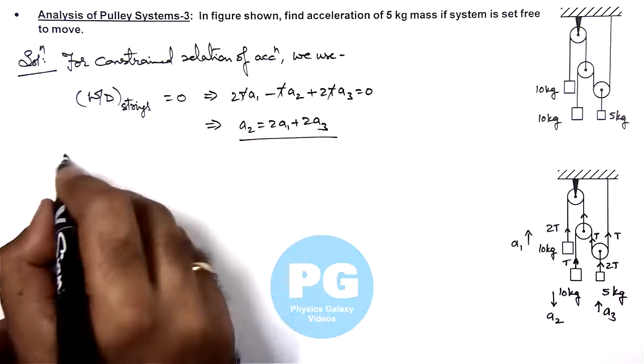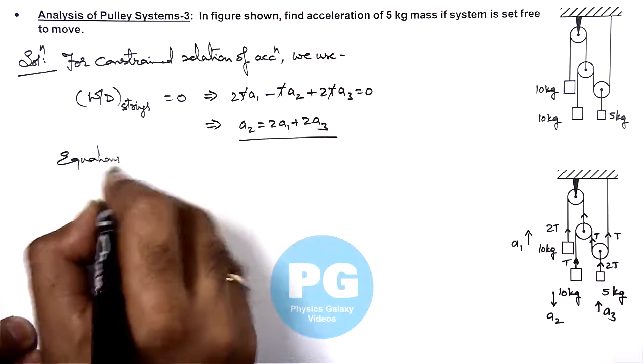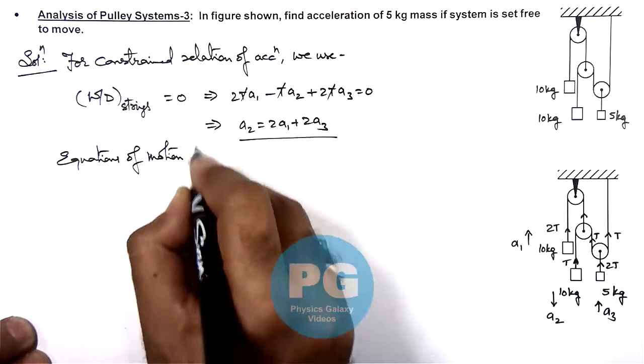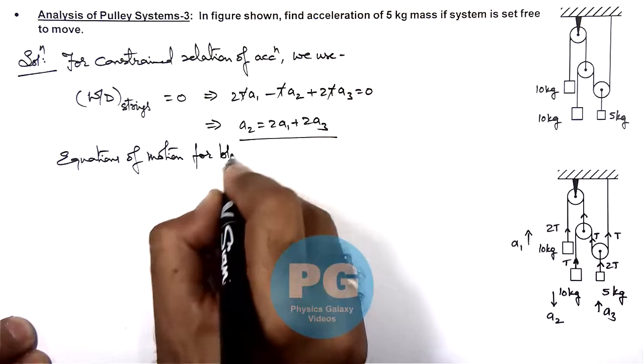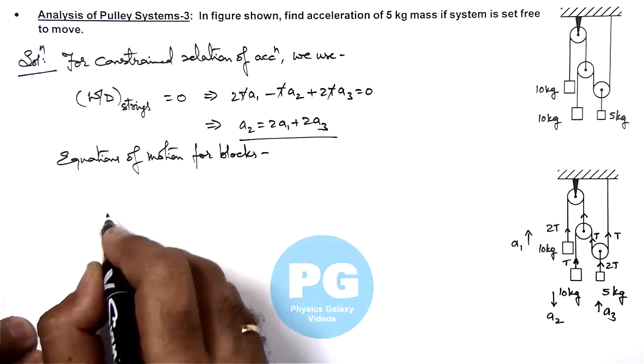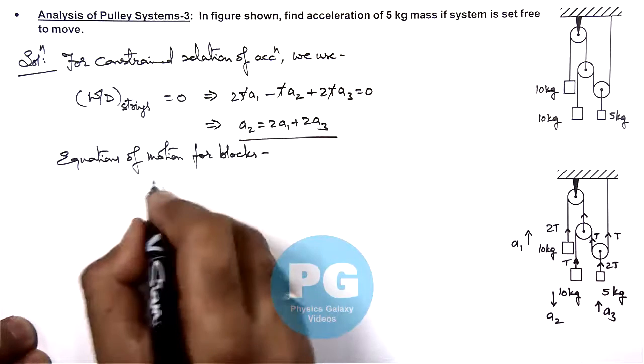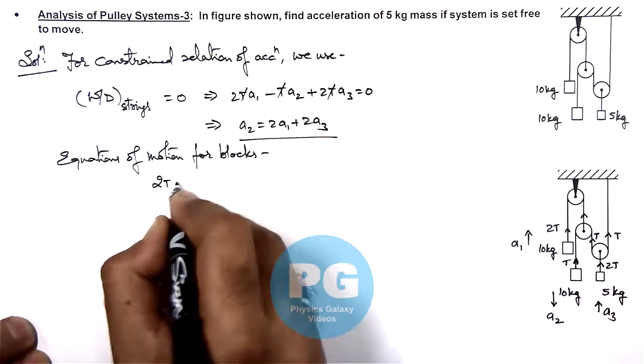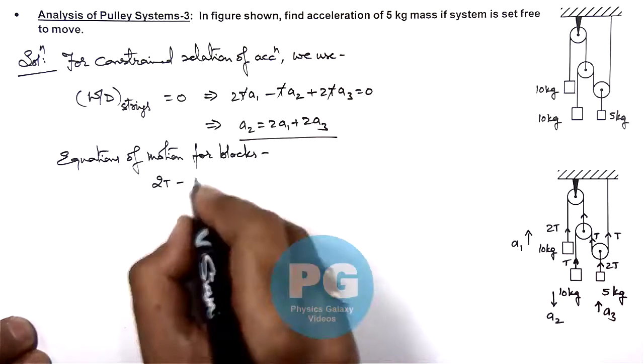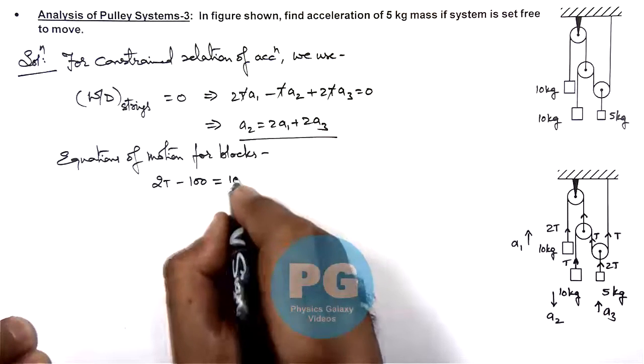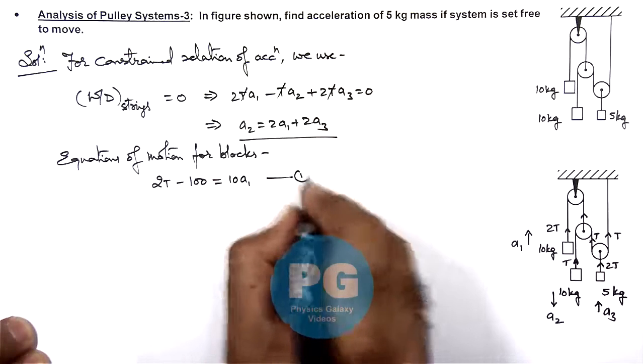Now we can directly write the equations of motion for blocks, one by one we can write for these. If we talk about this 10 kg block as 2t is in upward direction, its weight is downward, we can write 2t minus 10g, that will be hundred, is equal to its ma, that is 10 a1, that is say our equation 1.